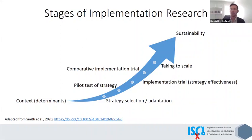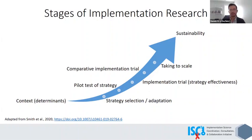One of the things we heard over and over again from our feedback early on was the importance of considering implementation research stage. There are a lot of implementation outcomes, especially when you start operationalizing them, but they are not all equally relevant at all stages of research. Both RE-AIM and Proctor talk about this fact, but as far as we know, they never went so far as breaking it down by stage — and we thought that would be very helpful to do.